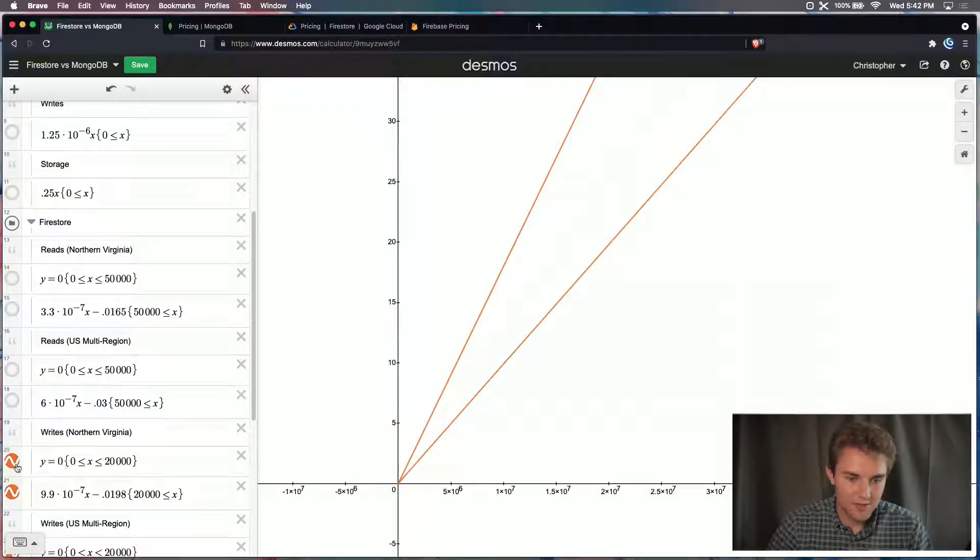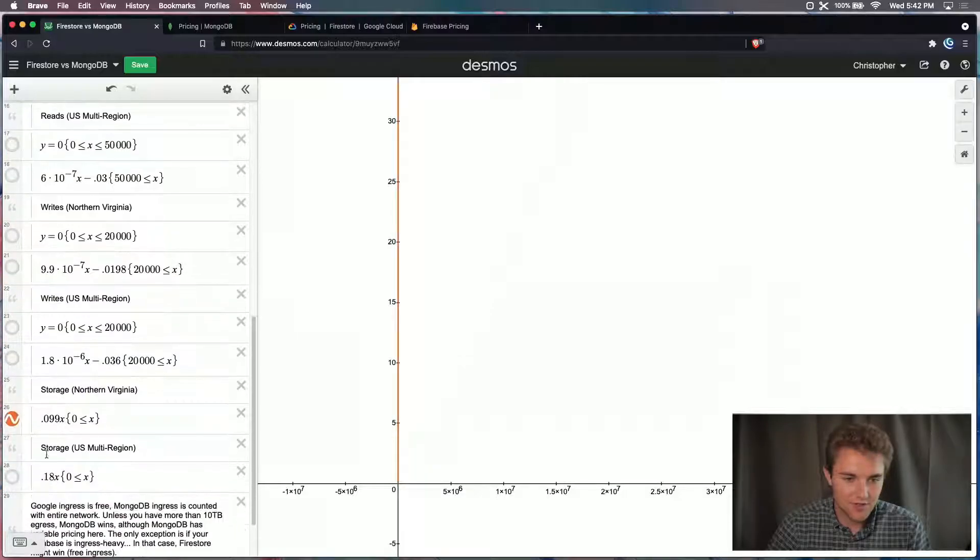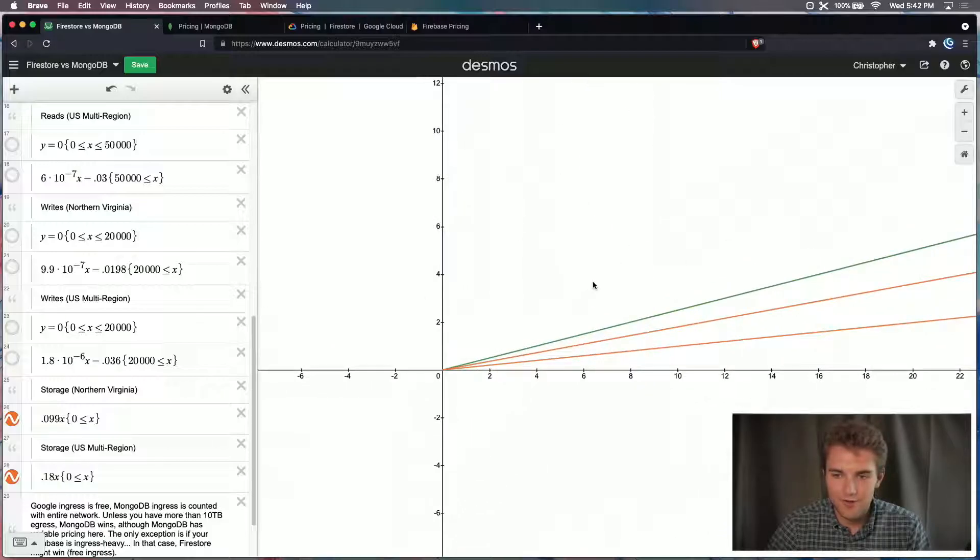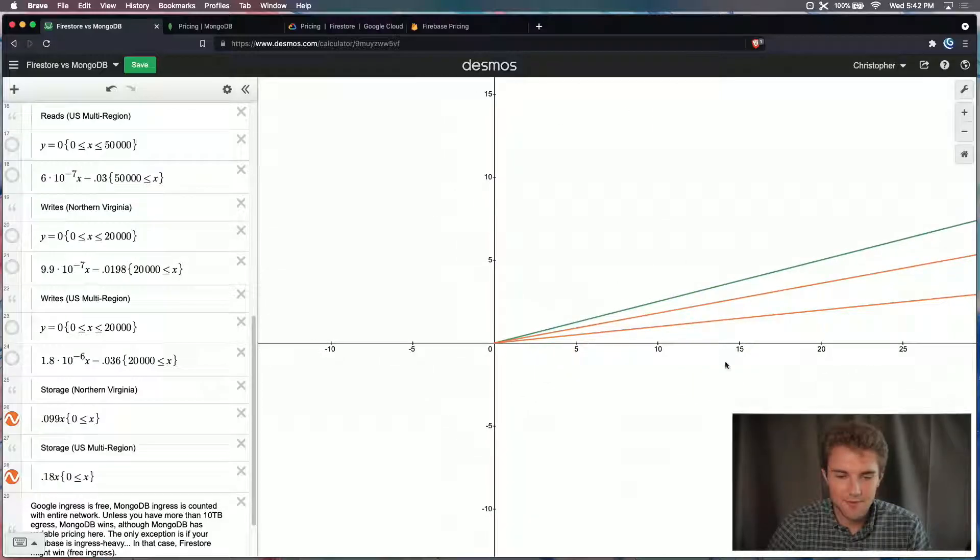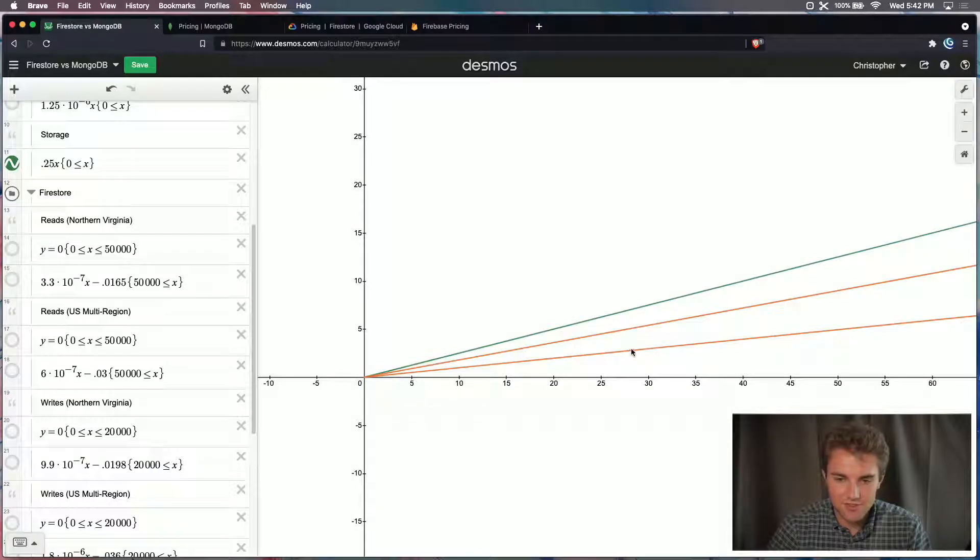Now finally, we'll take a look at storage before we're talking about a few other considerations. So here's storage for MongoDB and storage for Firestore. And as you can see, this is one area where Cloud Firestore beats MongoDB. Both multi-region and Northern Virginia are cheaper than MongoDB serverless. And I guess the thing to consider is I don't know how much storage is going to be the thing that causes you a lot of cost. Again, I could be wrong. Maybe you are not writing that much, but you have a lot of data to store. That could be the case.